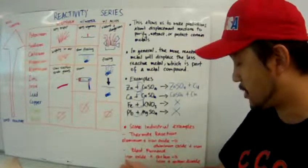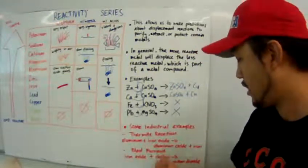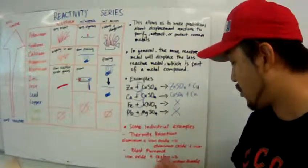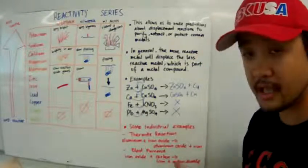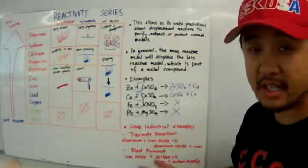so carbon will displace iron. And what is formed would be iron, the extracted pure iron, and carbon dioxide, which is basically a gas.